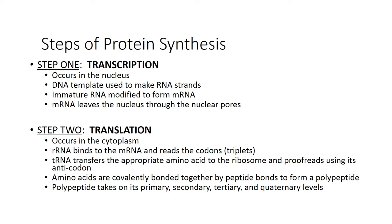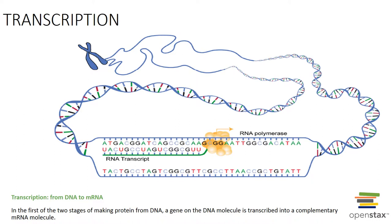Let's look at the process of transcription in a little more detail. Transcription is where we go from DNA to messenger RNA. DNA is bound together in a helix, and the helix needs to unwind. There's an enzyme that does that — helicase. It untwists the DNA double helix and exposes the complementary base chains.